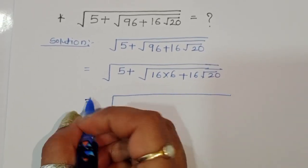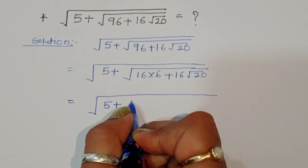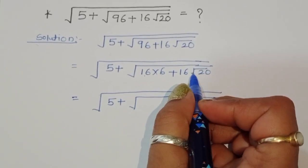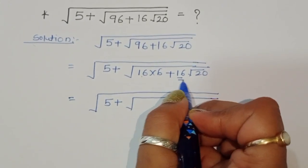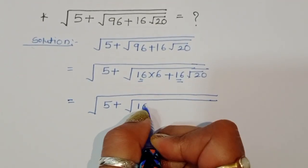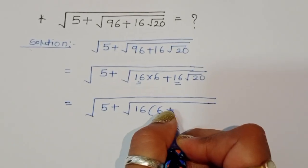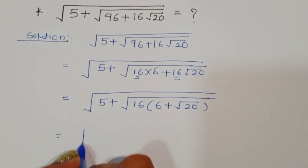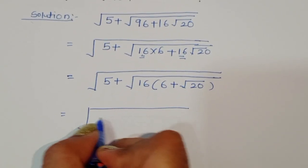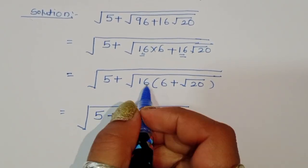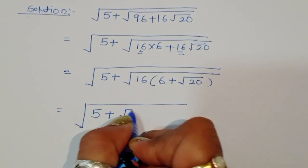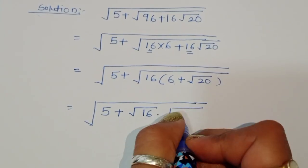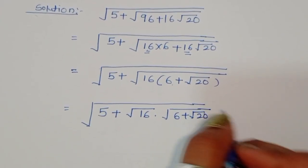This becomes square root of 5 plus square root of 16 times 6 plus 16 times square root of 20. You can see that 16 is common here, so we can take 16 as a common factor, giving us 16 times the quantity 6 plus square root of 20. Now we separate this term: square root of 16 times square root of 6 plus square root of 20.